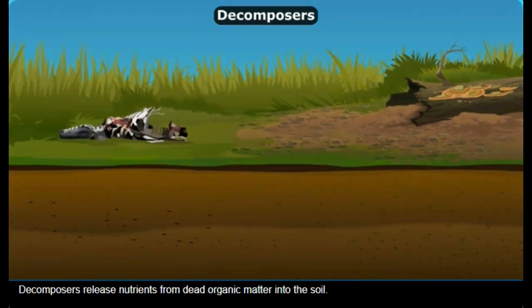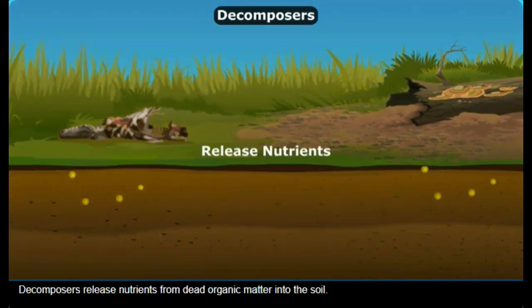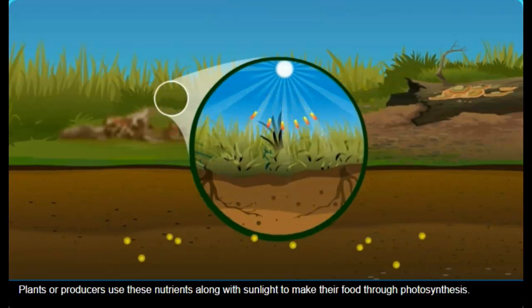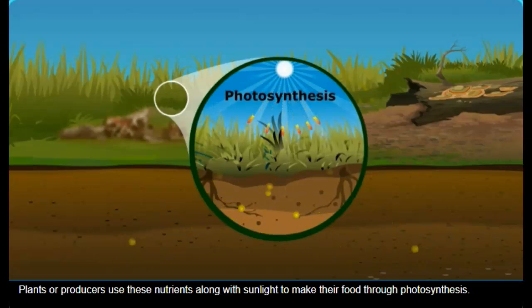Decomposers release nutrients from dead organic matter into the soil. Plants or producers use these nutrients along with sunlight to make their food through photosynthesis.